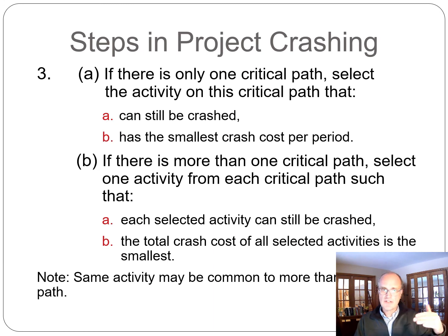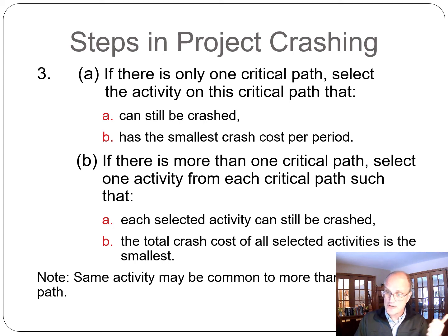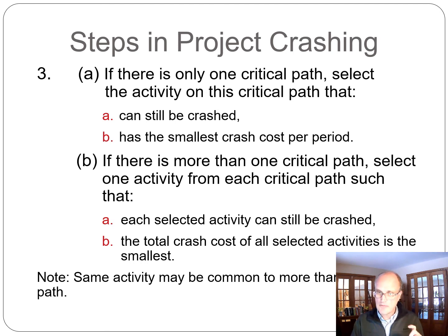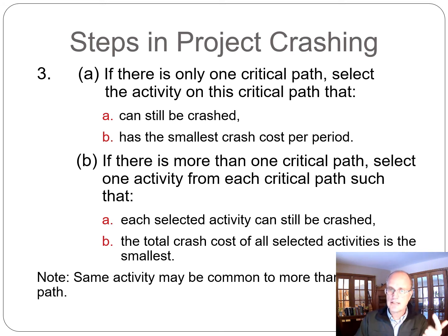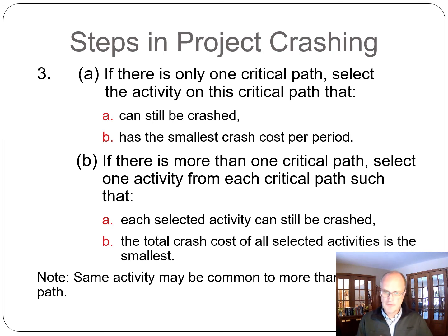So the next step: if there is only one critical path, select the activity on that critical path that can actually be crashed — that's the first criterion. The second criterion is that it has the smallest crash cost per period. Usually you do one period at a time to evaluate whether something else becomes critical. If it's one critical path, pick the cheapest activity you can crash and crash it by one unit of time.